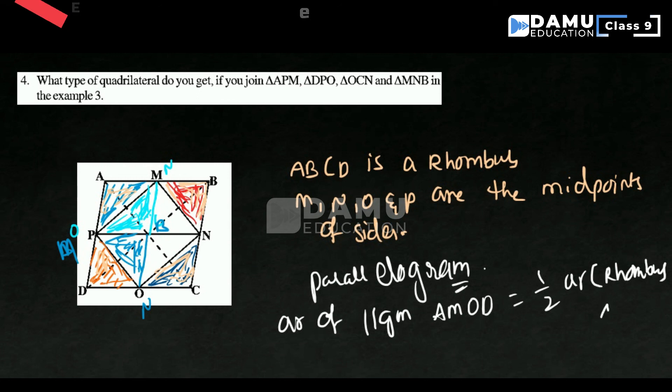Area of the rhombus ABCD. So like this, we will get the parallelogram. If you join all these triangles, this one we are taking here and this triangle we are taking here.